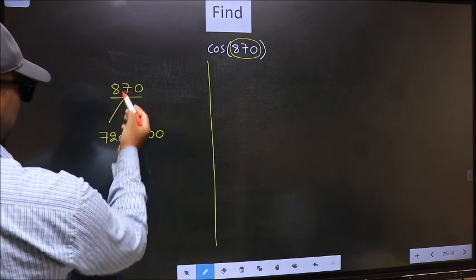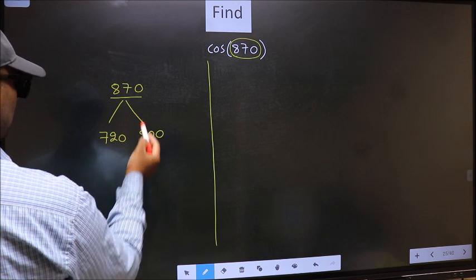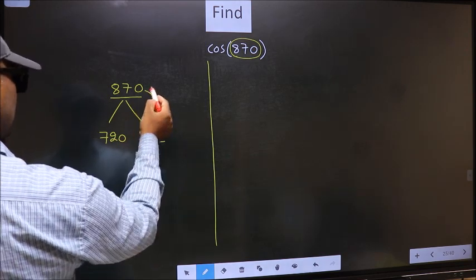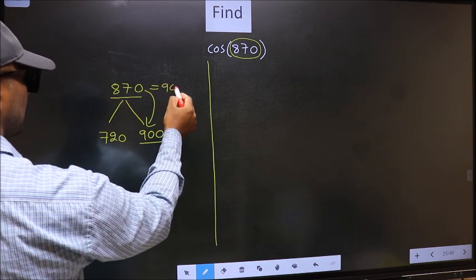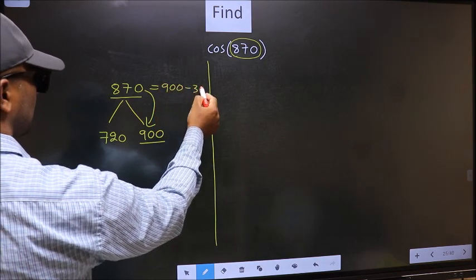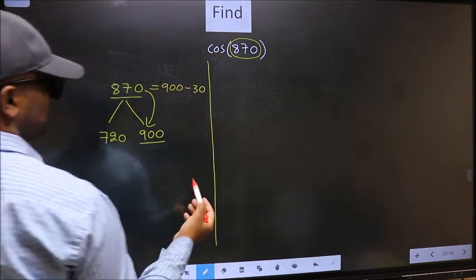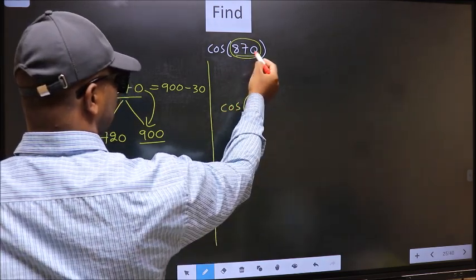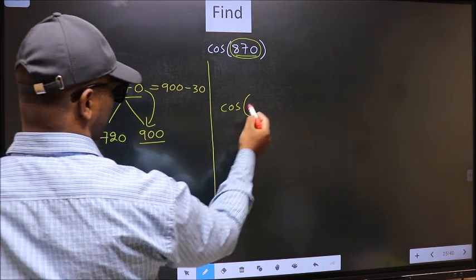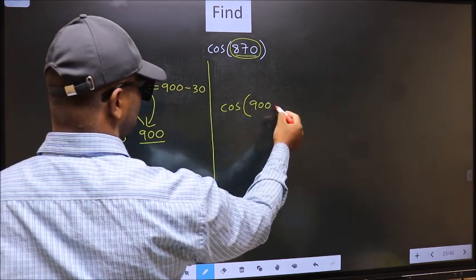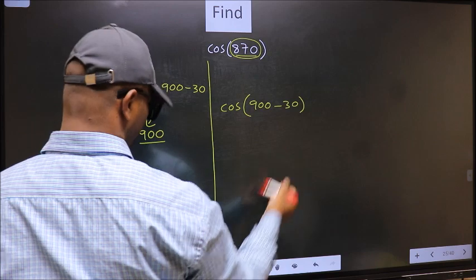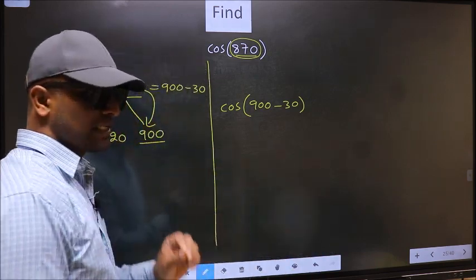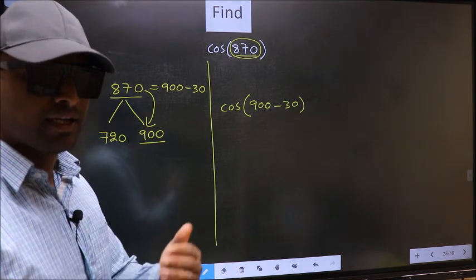Next, 870 is close to which number? This is close to 900. So, 870 now should be written as 900 minus 30. This will become cos in place of 870. Now we write this: 900 minus 30.